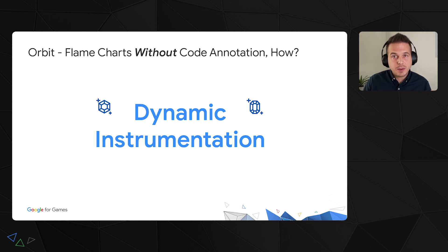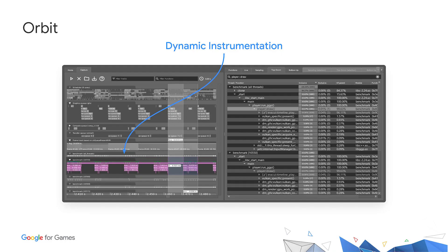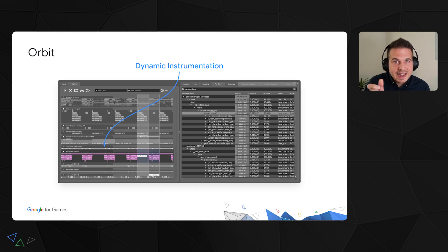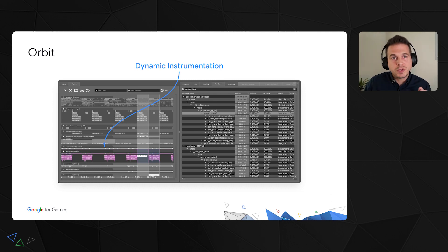In Orbit, you can select functions to dynamically instrument or hook. On the next capture, the timeline will be populated with all occurrences of the hooked function calls. This information is presented as flame charts in the capture view. Note that this is exact information — not statistical data like what you would get from sampling. Under the hood, Orbit is actually intercepting function calls and getting a timestamp on the entry and exit points of instrumented functions.